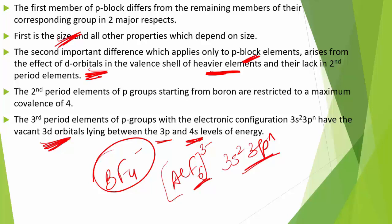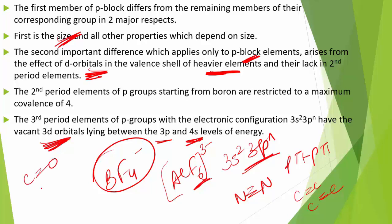The first member of a group differs from heavier members in its ability to form P-pi, P-pi multiple bonds to itself, such as C=C, C≡C, and N≡N. It can also form multiple bonds with other second-row elements like C=O, C=N, and N=O.